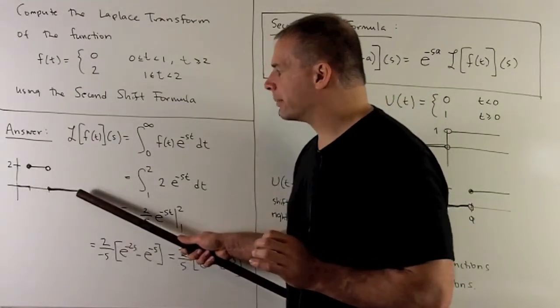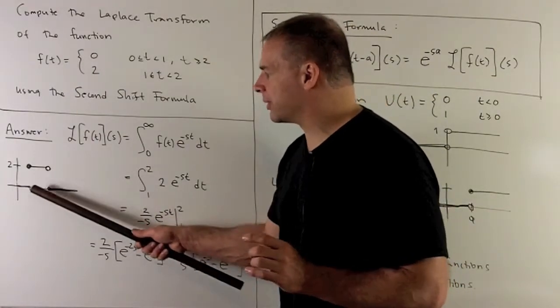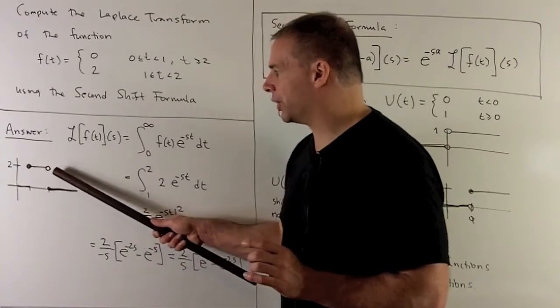Here's the picture of our graph. It's going to be 0 everywhere except in the interval from 1 to 2, and there it's going to be equal to 2.